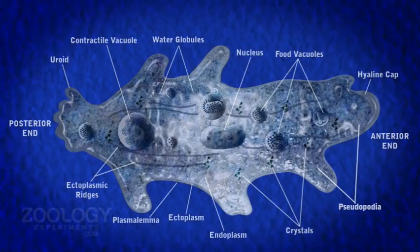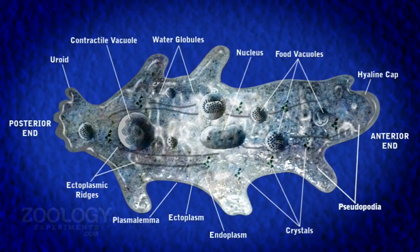Amoeba shows typical amoeboid movement by the formation of finger-like temporary processes called pseudopodia. These are called lobopodia.